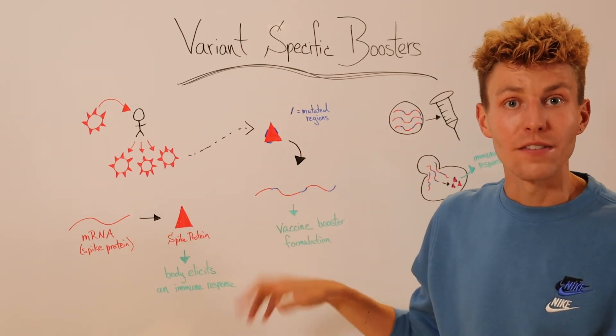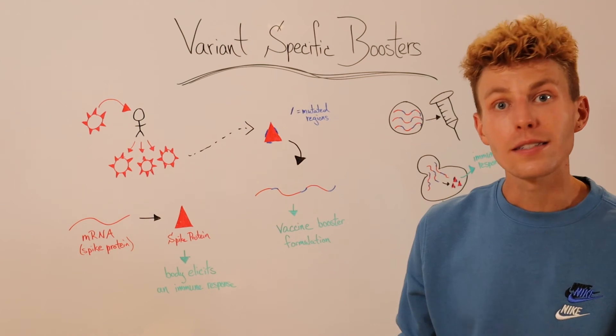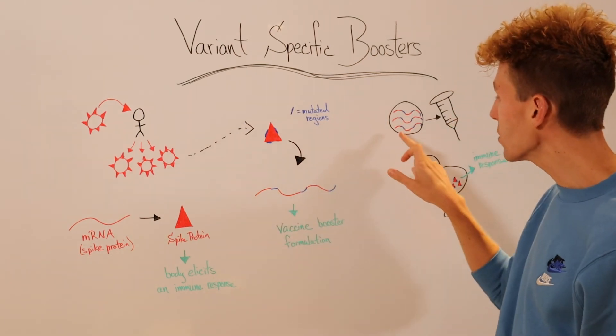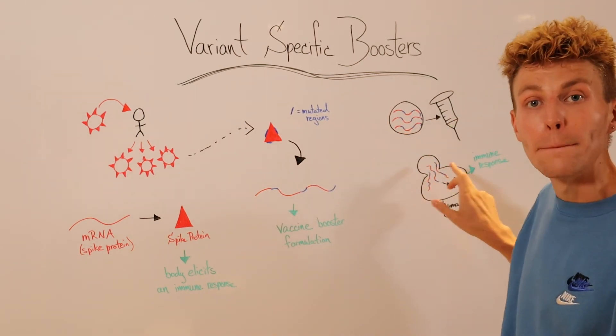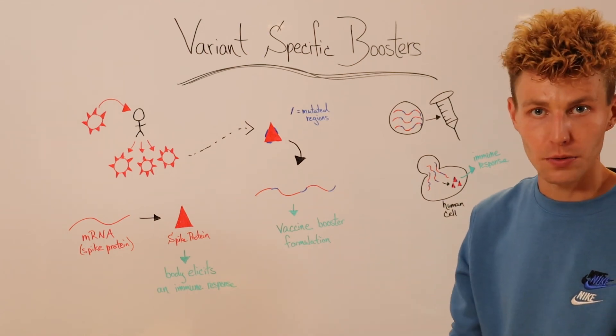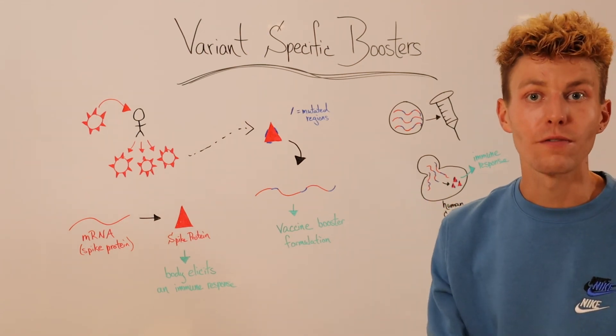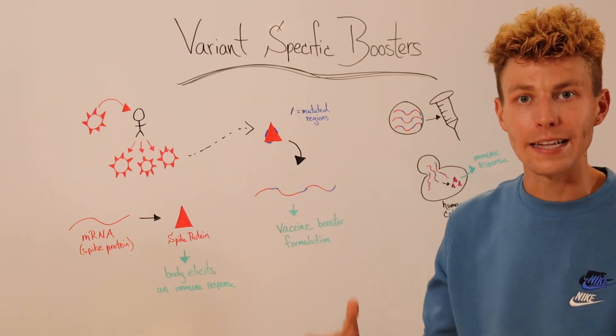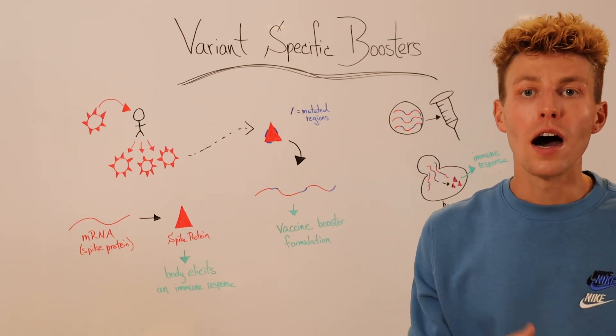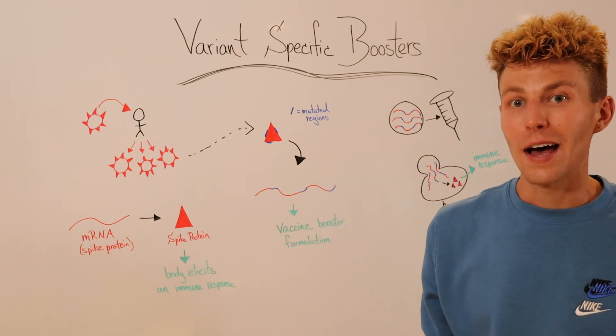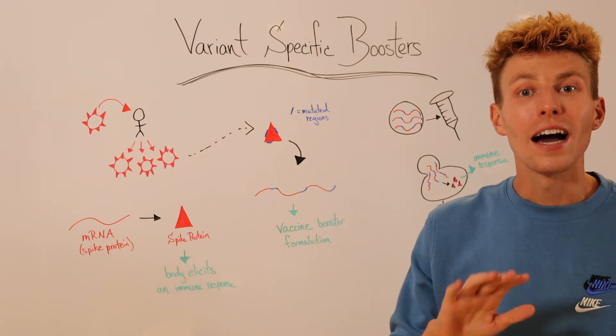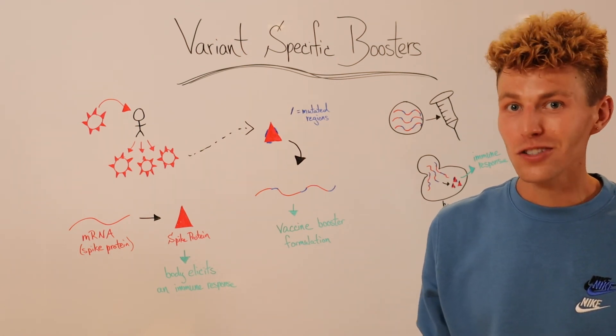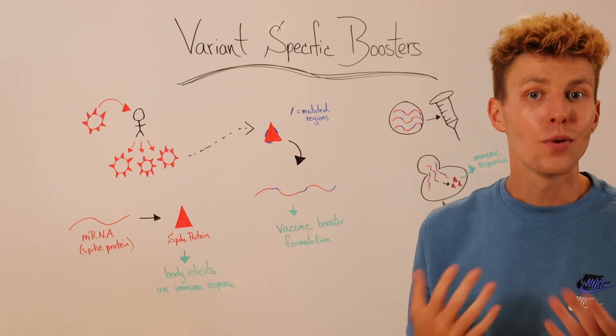When that variant-specific mRNA is administered to us in the form of a vaccine, it allows our bodies to make that mutated form of the spike protein. So maybe it's the omicron form of the spike protein, and then our bodies can create a more robust response against the omicron variant of SARS-CoV-2, thus allowing us to be a bit more protected against a SARS-CoV-2 infection in case you come in contact with it in the future.